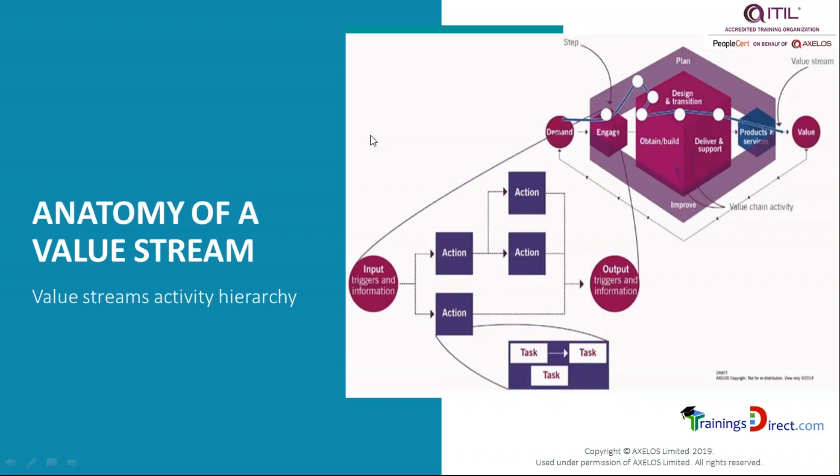Value stream inputs - what are the inputs? It's very logical and intuitive. Demand or a trigger because of some event, that's one thing. The second thing could be the information provided along with the demand, or information could come from another value stream, and that's the most interesting part.